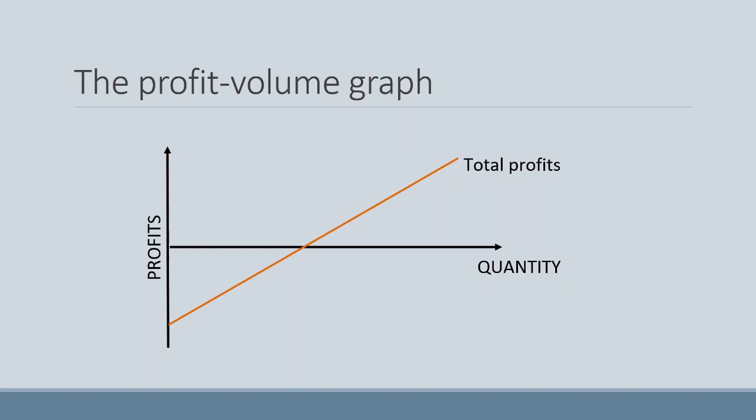So where the total profit line crosses the x-axis, it represents our break-even point. When the total profit line is above the x-axis, it means we are making profits, but when it is below the x-axis, it means we are incurring losses. You will also notice that where the total profit line meets the y-axis, this will represent our total fixed costs.